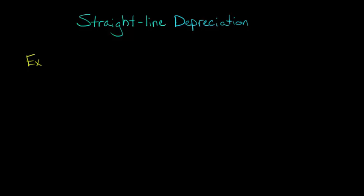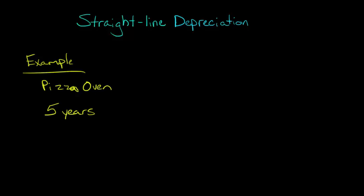Let's say that you have a pizzeria and you decide you're going to buy a new oven. You have a pizza oven to cook your pizzas, and this oven is going to last — you estimate it'll have a useful life of 5 years. That's how long you're going to use this asset. And the cost of this asset, what your purchase price is, let's say that's $50,000 you pay for this pizza oven.